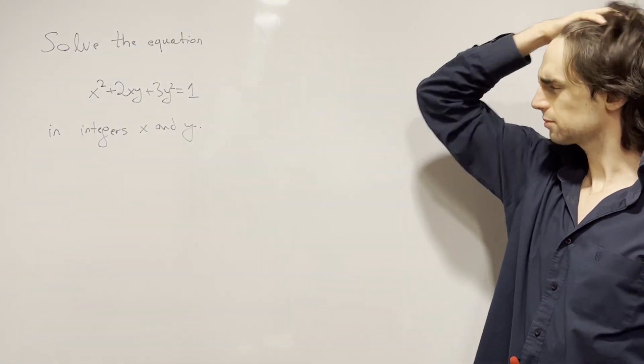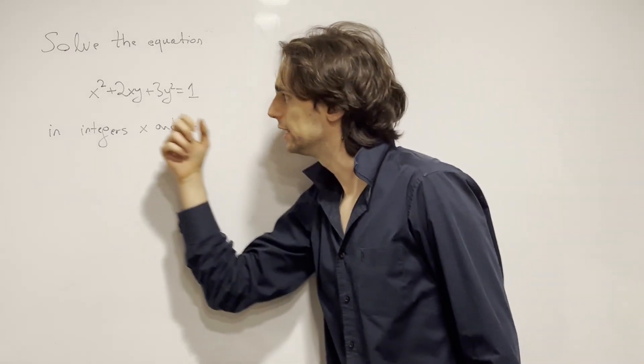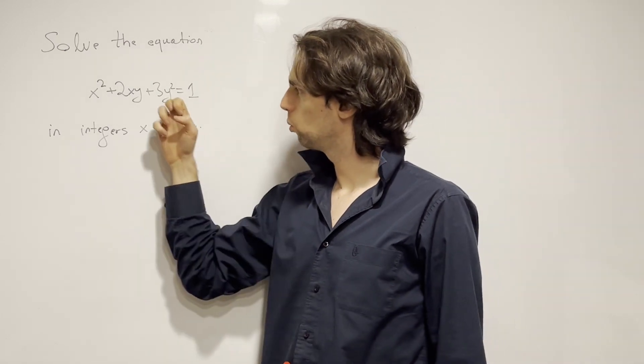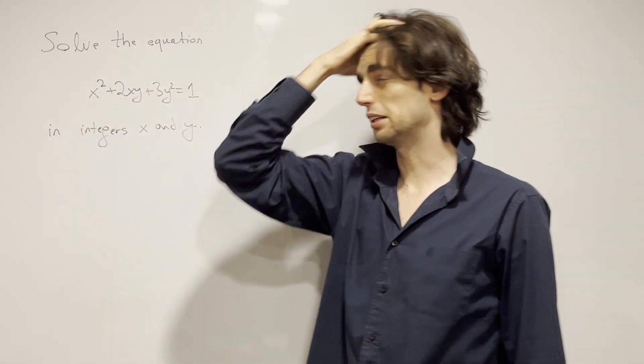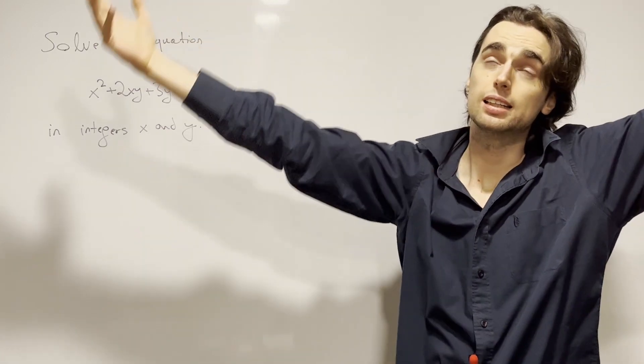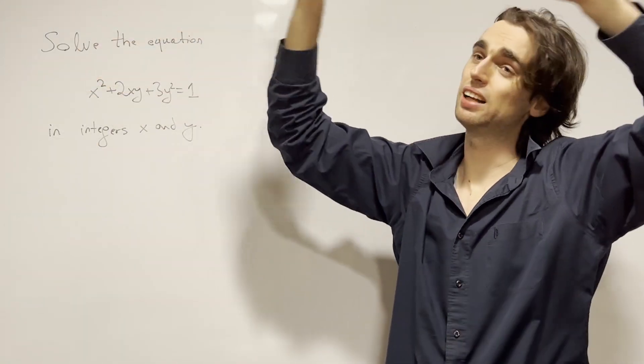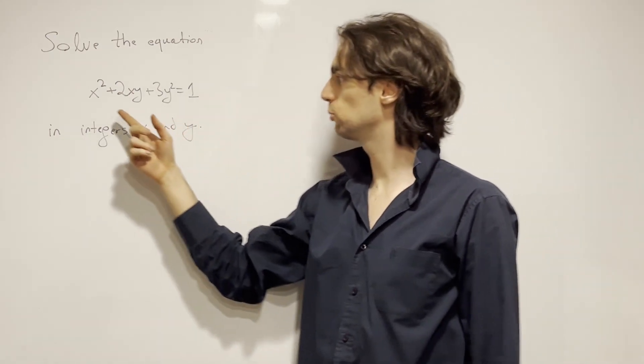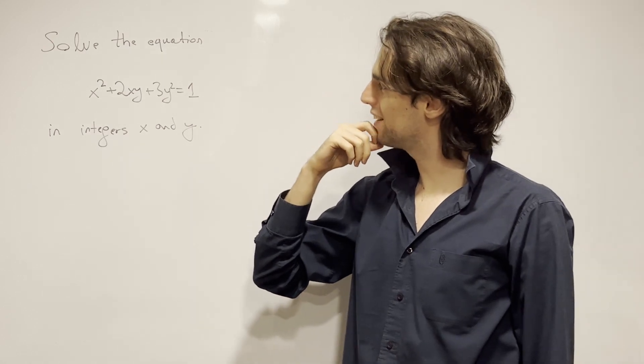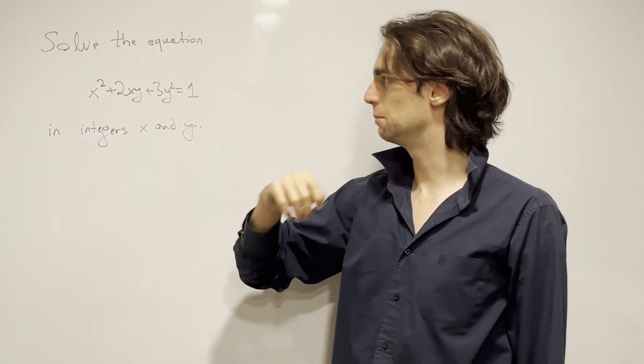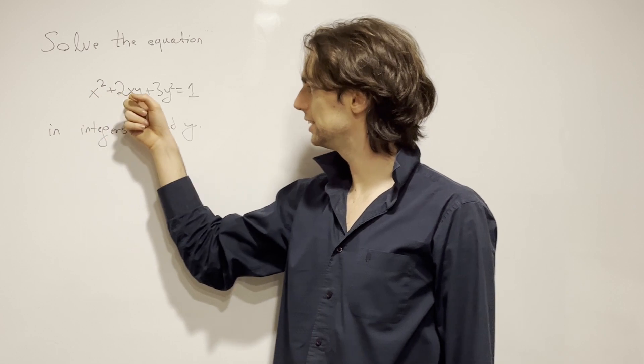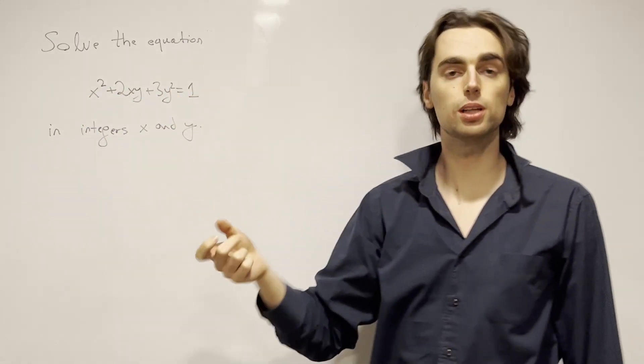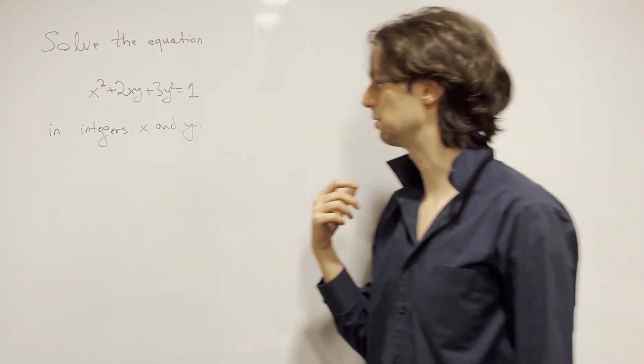And you might think, okay, let me try another thing. Let me see divisibility. x divides 3y² minus 1, y divides this and this, so it divides x² minus 1. Is there something I can do with that? x divides this, y divides that. It doesn't seem like it. Well, wait a second, x and y, what can they have in common? Well, if x and y are divisible by some d, then d divides this, this, this, actually d² divides this, this, and this, d² divides 1. So they can only have 1 in common, which means they're relatively prime.